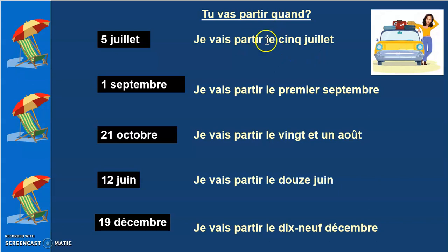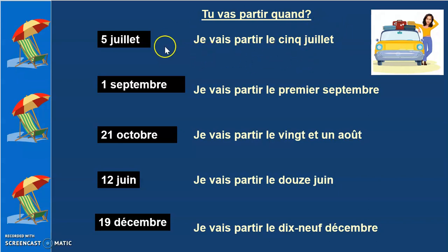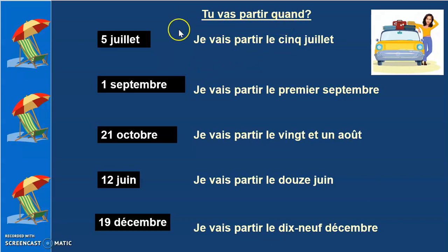You would use le, the definite article, and then the number 5, and then the month juillet. At the beginning of the sentence you would start with Je vais partir, because the question is Tu vas partir quand? — When are you going to leave? So you would say Je vais partir — I am going to leave — and then the number and the month.